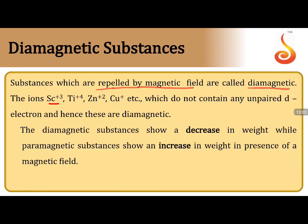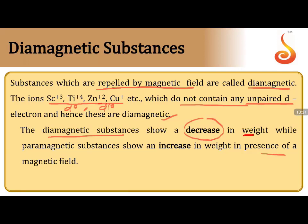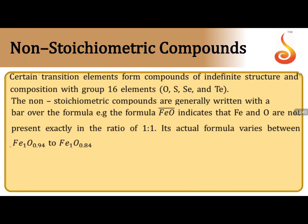Diamagnetic materials are weakly repelled by a magnetic field. All species with d⁰ or d¹⁰ configuration have no unpaired electrons and are diamagnetic. An important applicative point: when a diamagnetic substance is placed in an external magnetic field, there is a decrease in its weight. When a paramagnetic substance is placed in a magnetic field, there is an increase in weight.